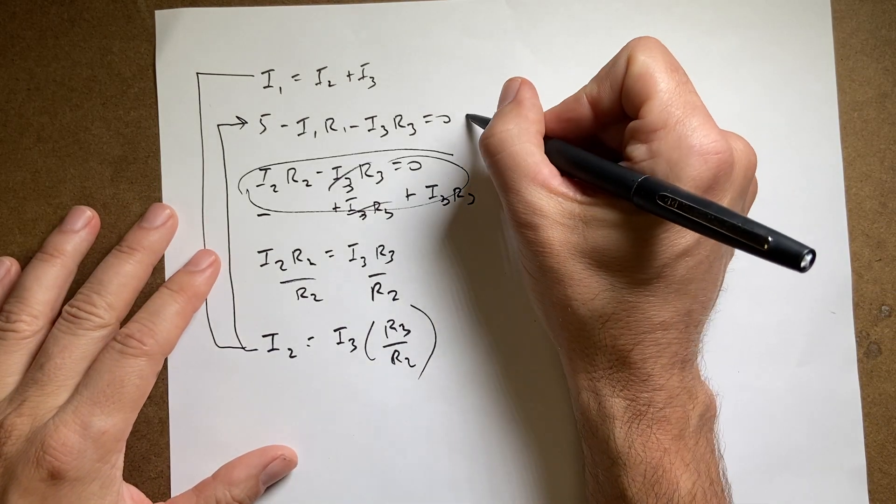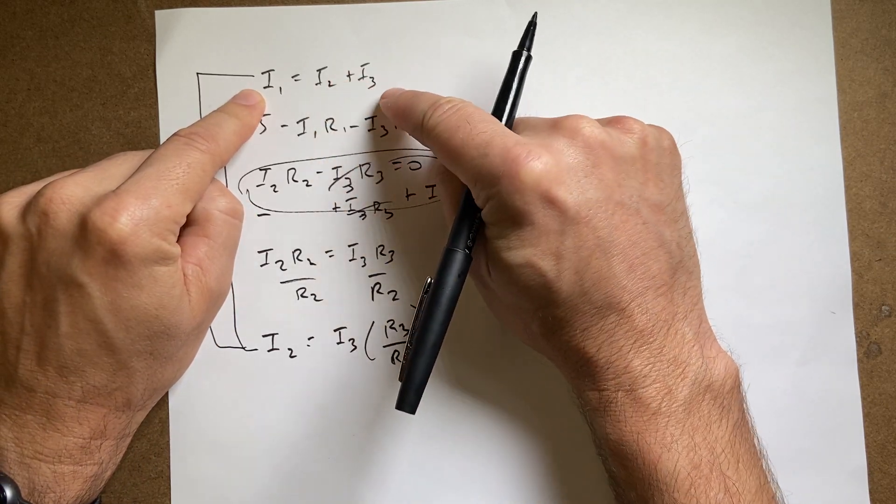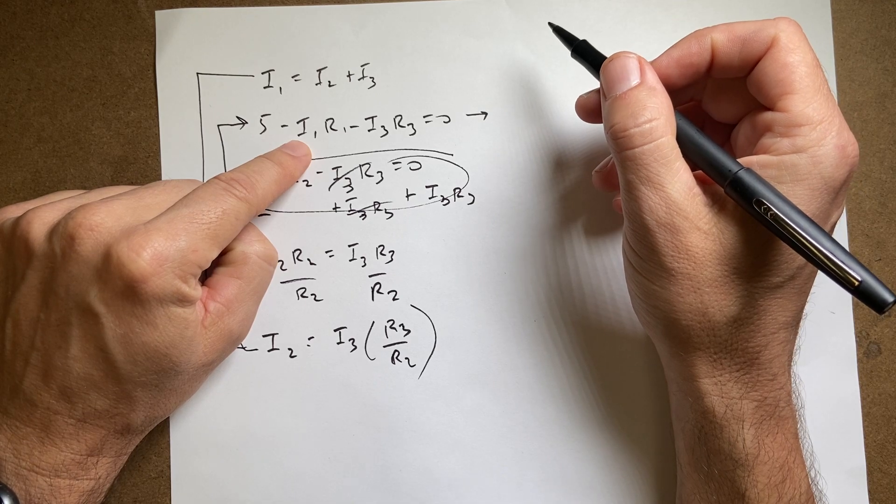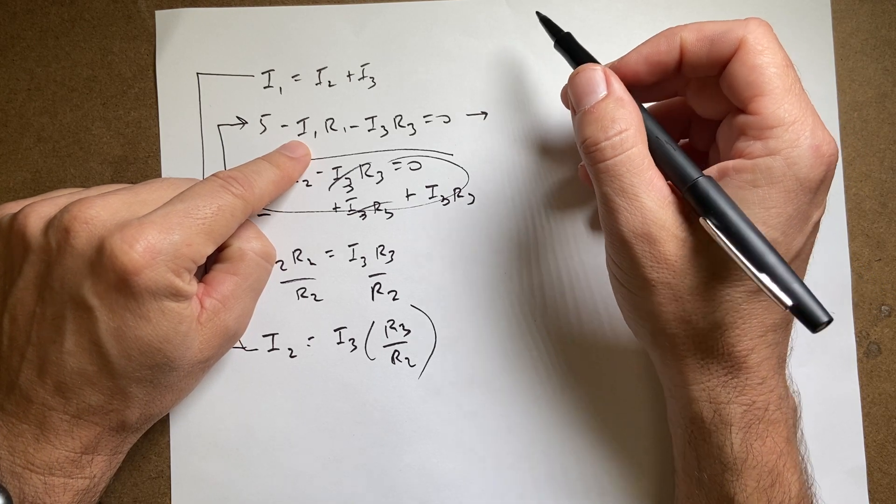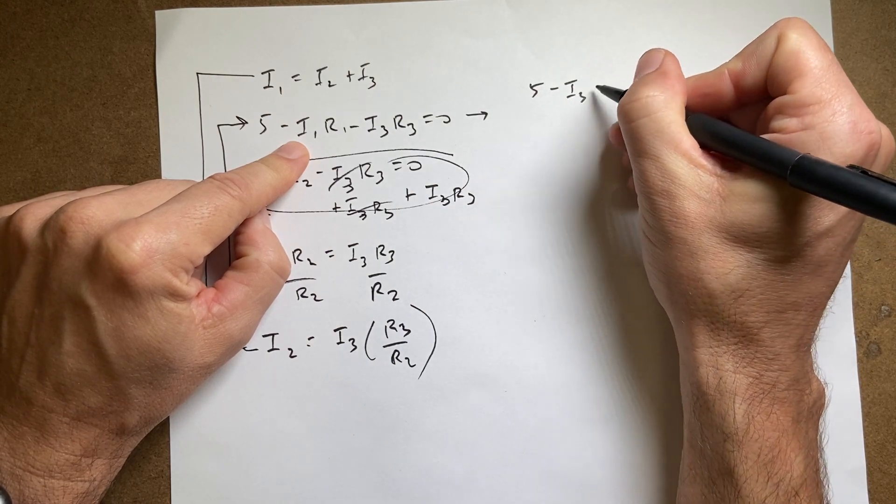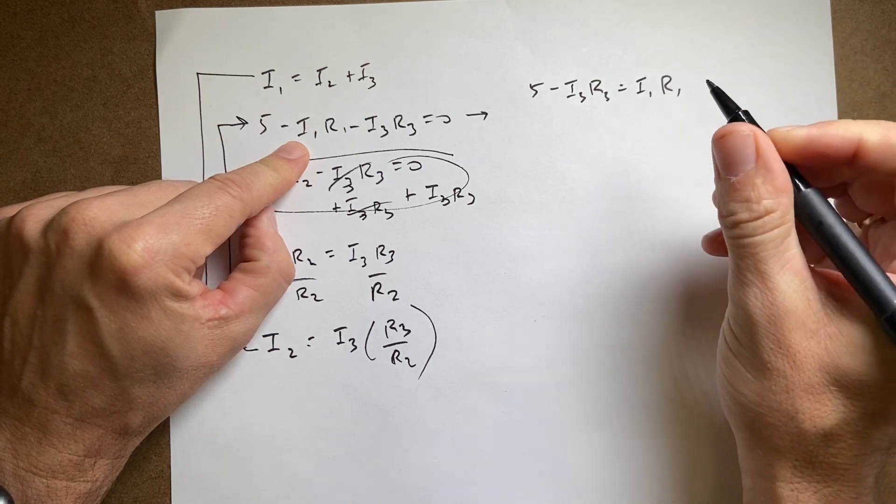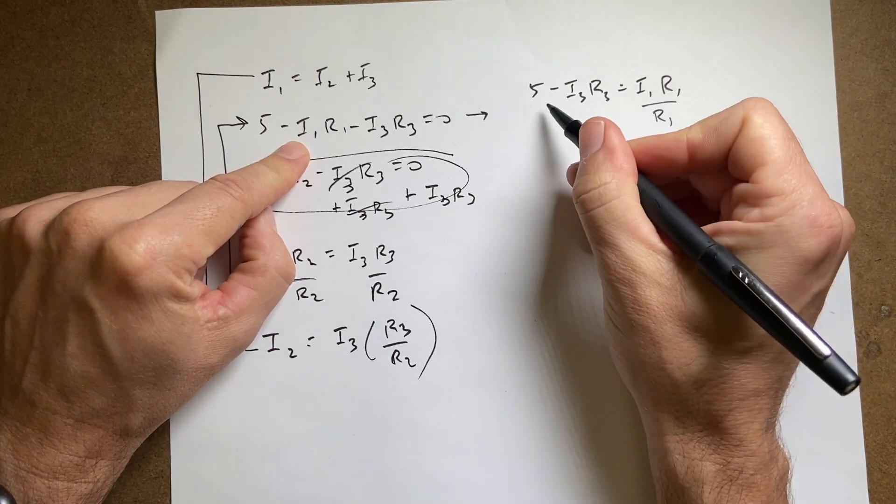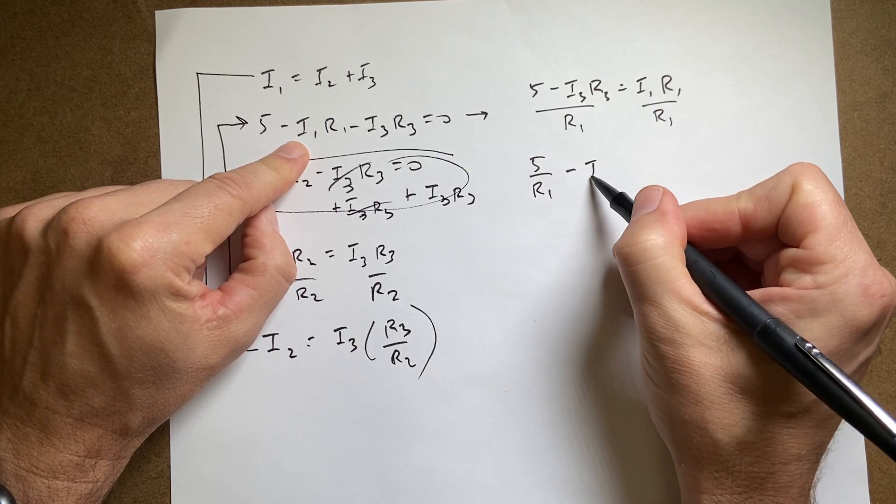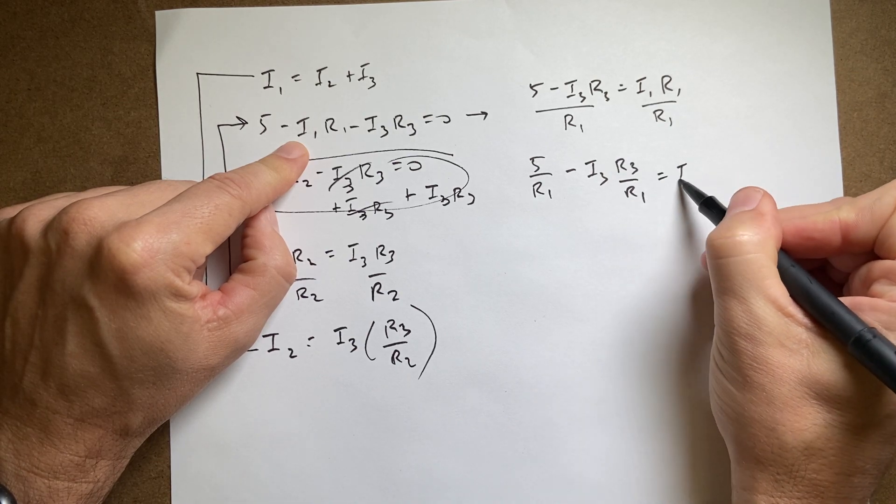Okay, so I'm gonna take this one and solve for I1. And then up here I'll substitute in I1 and I2 and get an equation with just I3. Okay, so if I solve this one for I1, I'm gonna add I1 R1 to both sides and I get 5 minus I3 R3 equals I1 R1. Now I'm gonna divide both sides by R1. And I get 5 over R1 minus I3 R3 over R1 equals I1.